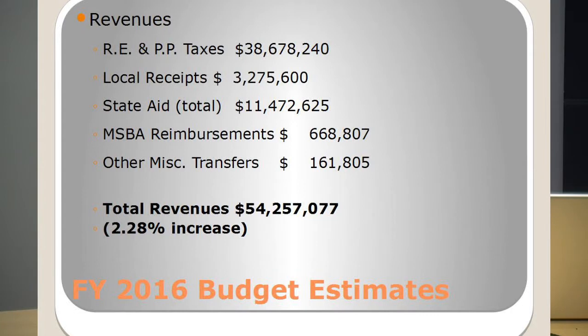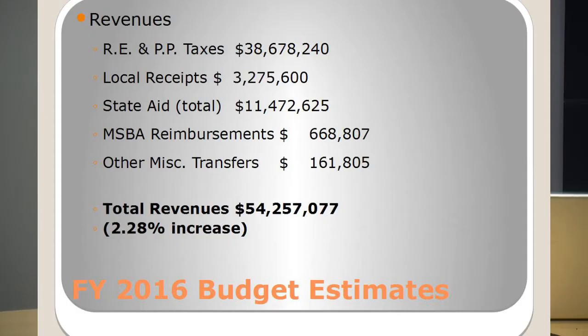MSBA reimbursements are money we receive from the state paying the state's share of the bond that built Birchland Park Middle School — a revenue that when the school is paid off, we'll no longer receive. Other miscellaneous transfers account for $161,000 of the revenue this year, from various revolving funds such as the Community Preservation Fund. So the revenues we are putting forward as a recommendation total $54,257,077, a 2.28% increase from last year's revenues.